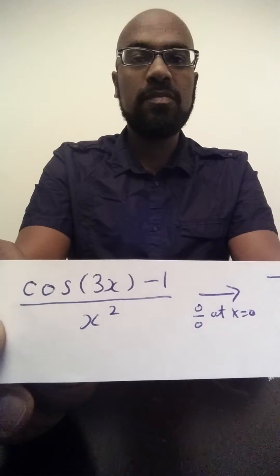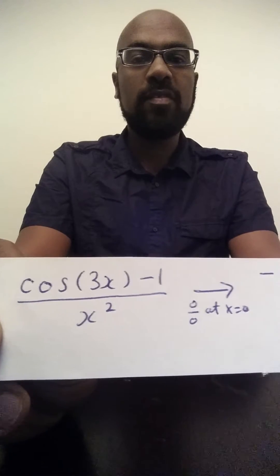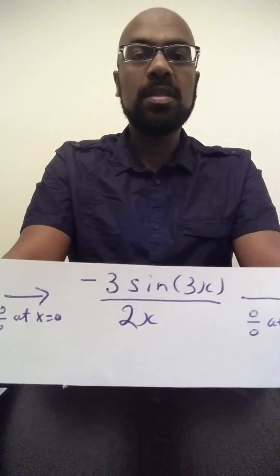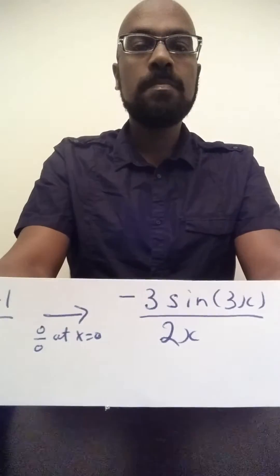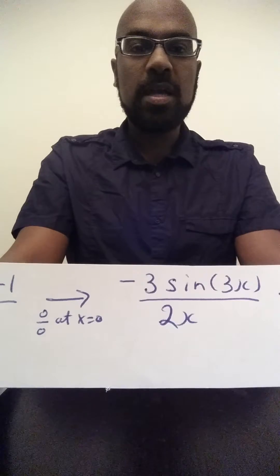If we do that, calculating the derivative of cosine 3x and the derivative of x squared, we get something like this: negative 3 sine 3x over 2x.